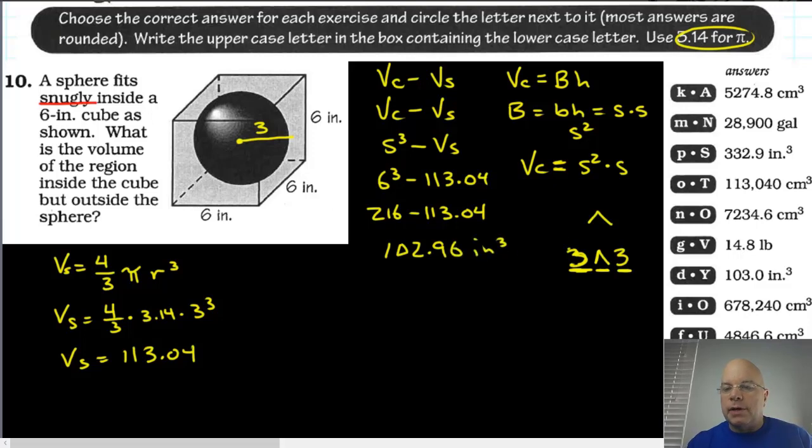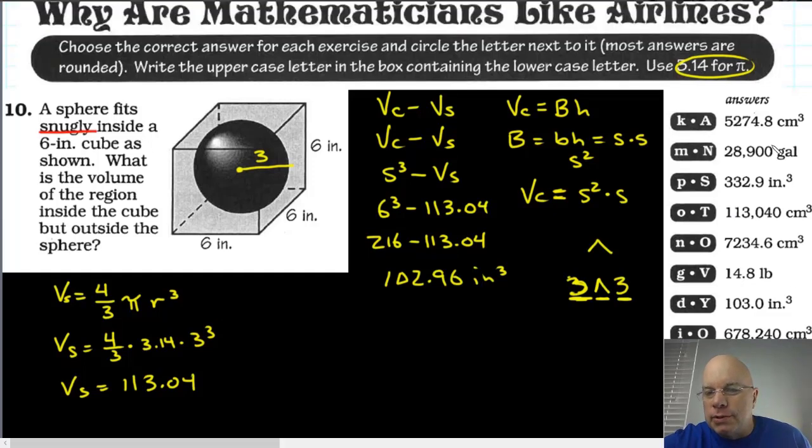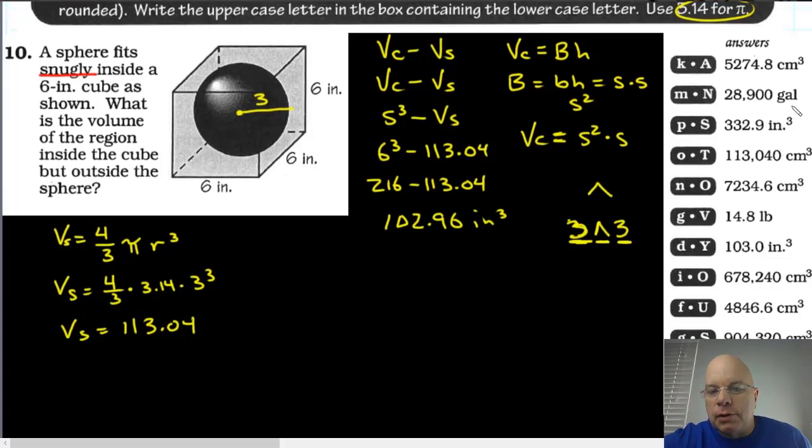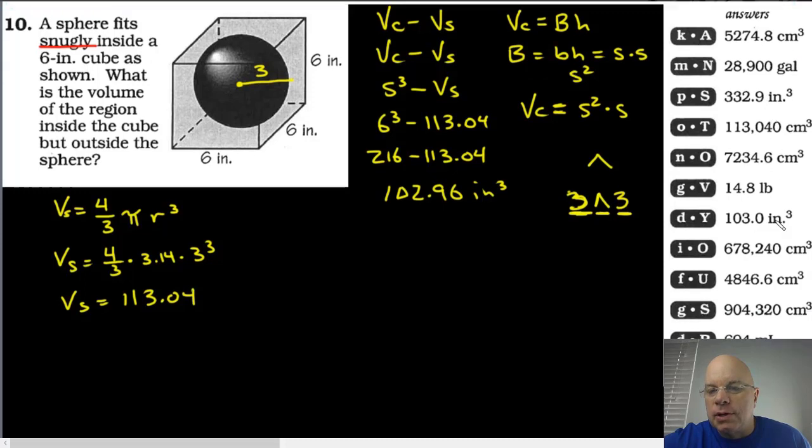And then looking at the answer choices, I'm looking for something close to 102.96. 103.0 inches cubed, if I was rounding, even if I was rounding to the nearest tenth, I would round to 103.0. So the answer choice we're looking for is right here.